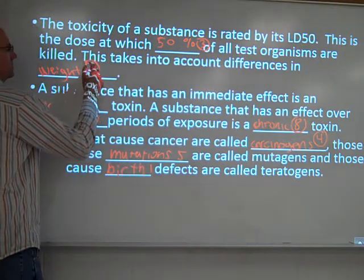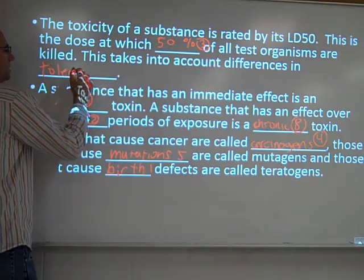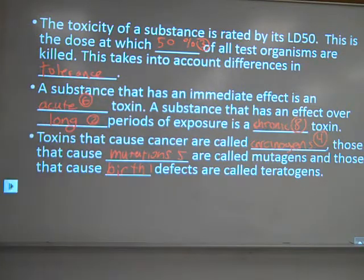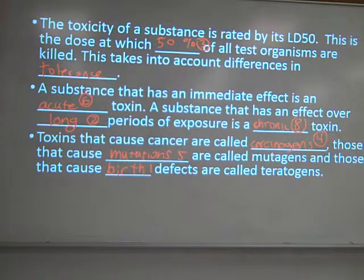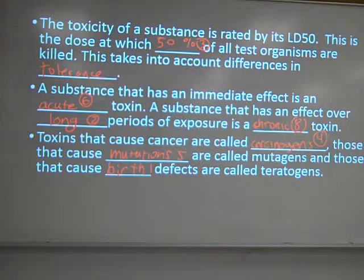The reason they use the 50% line is to account for differences in tolerance. You wouldn't want to establish a toxicity level as soon as one organism dies, because that organism might be particularly sensitive — it might have a disease or something. That makes it impractical as a guideline. But you also wouldn't want to wait until all organisms are dead, because then you'd be setting toxicity levels that are very high. So they split it in half — 50% gives you guidelines, and it's just a way to rate different toxins.